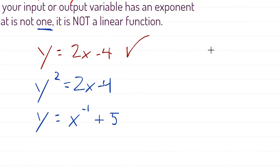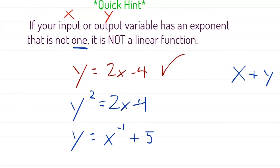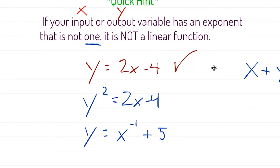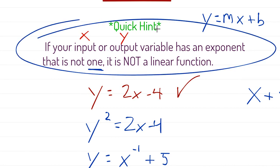We can write linear equations multiple ways. For example, x plus y equals 5 is actually the standard form of a linear function — x has an exponent of 1 and y has an exponent of 1, so this is linear. As a shortcut: any equation where x or y is raised to anything other than 1 is not a linear function. You can also check by asking: can you put the equation in y equals mx plus b form? If not, it's not linear.